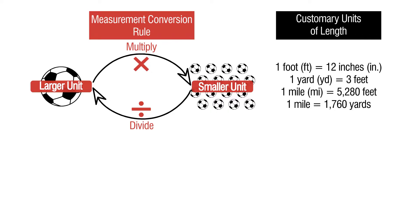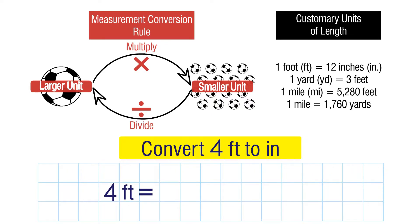Let's take a look at an example. Convert 4 feet to inches. As you can see, we're going from larger units to smaller units, so we need to multiply. 1 foot is 12 inches, so we multiply 4 times 12. We get 48 inches.